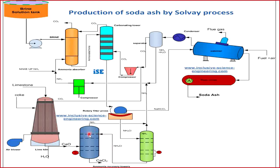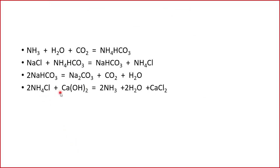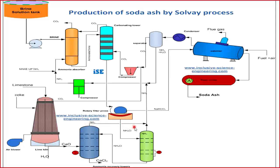In the second ammonia recovery tower, ammonium chloride reacts with calcium hydroxide — formed from CaO plus H₂O. This follows the reaction: ammonium chloride reacts with calcium hydroxide to form ammonia, water, and calcium chloride. Water and calcium chloride remain in solution form while ammonia is in gaseous form, leaving the second tower from the top. This ammonia is mixed with the ammonia from tower one and the aqueous ammonia from the separator. All three ammonia streams are compressed, makeup ammonia is added, and the combined ammonia is sent into the absorption tower where it is absorbed in brine.